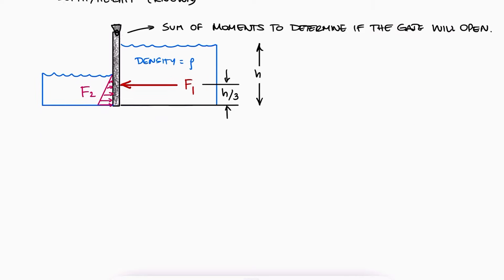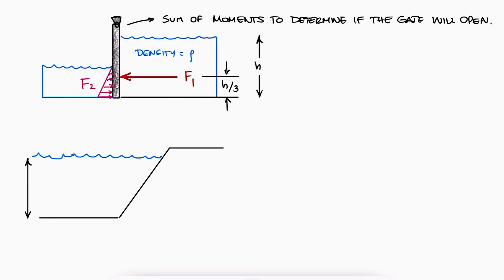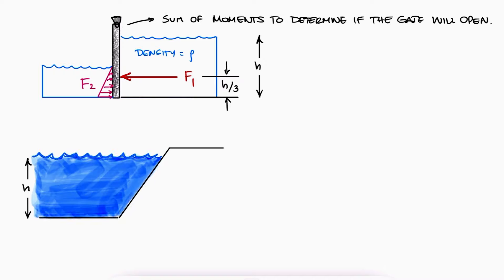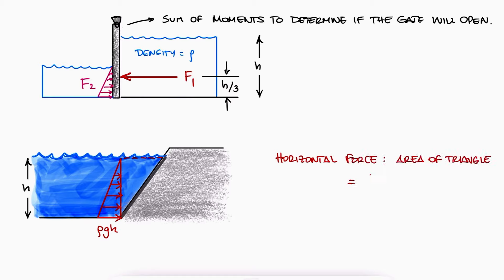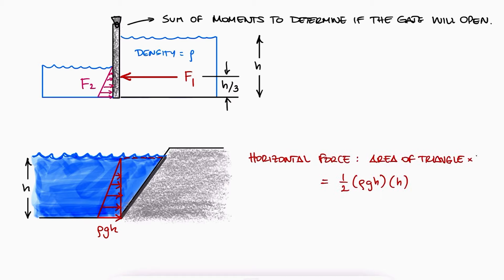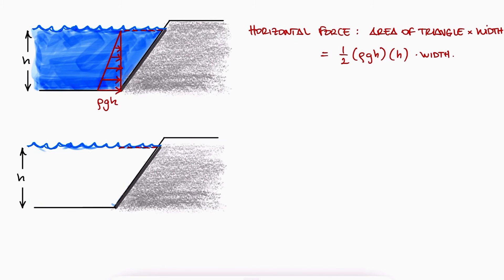The process of finding the resulting horizontal load from the fluid pressure doesn't only work for vertical surfaces in contact with a liquid reservoir. If the surface in contact with the liquid is inclined, the horizontal forces affecting the surface will be calculated in the exact same manner. The magnitude of the equivalent point load in the horizontal direction would be equal to the area of the triangular distributed load — meaning rho gh times h divided by 2 — and it is located one third of the way from the bottom.